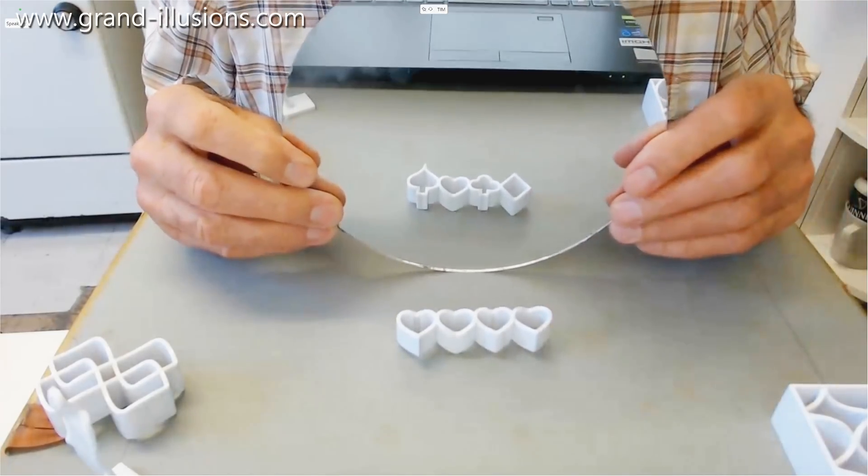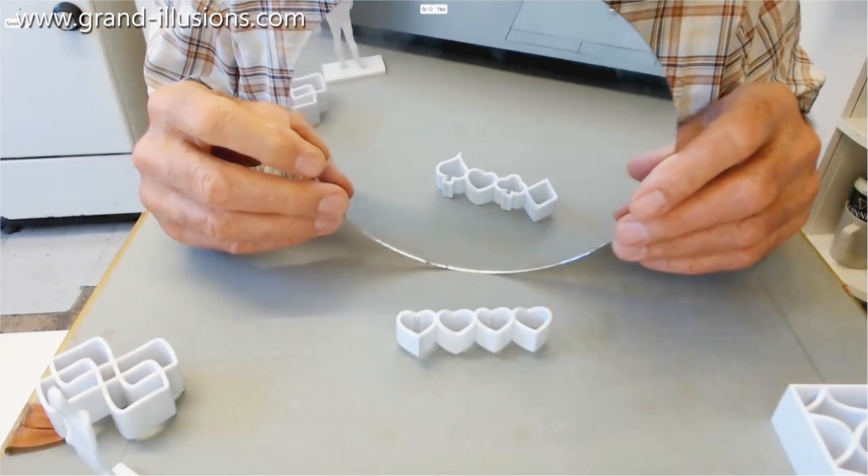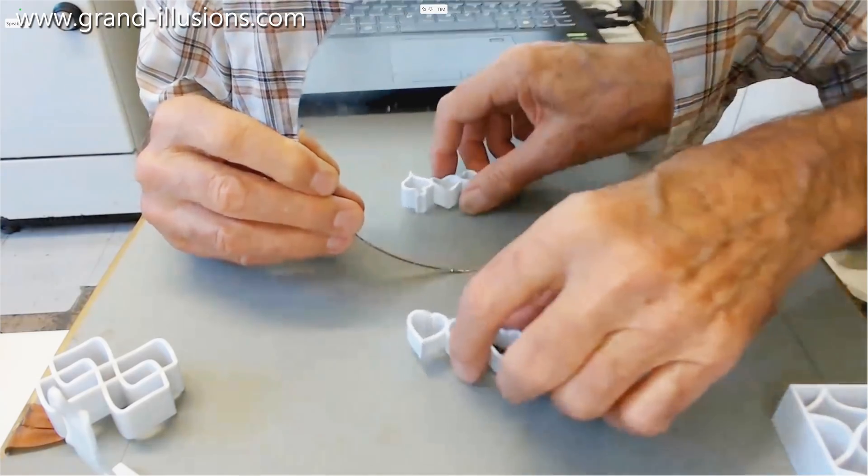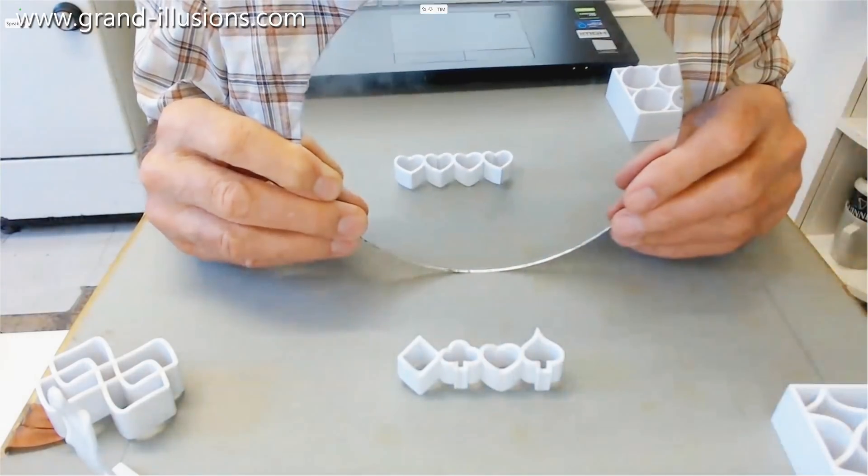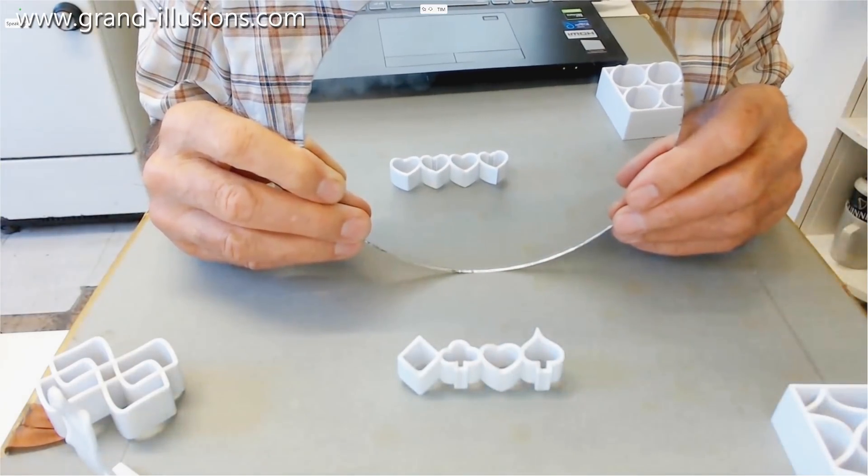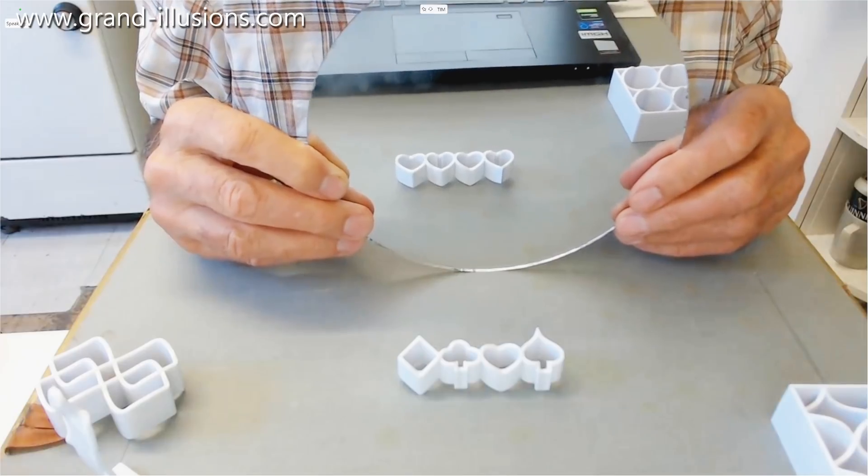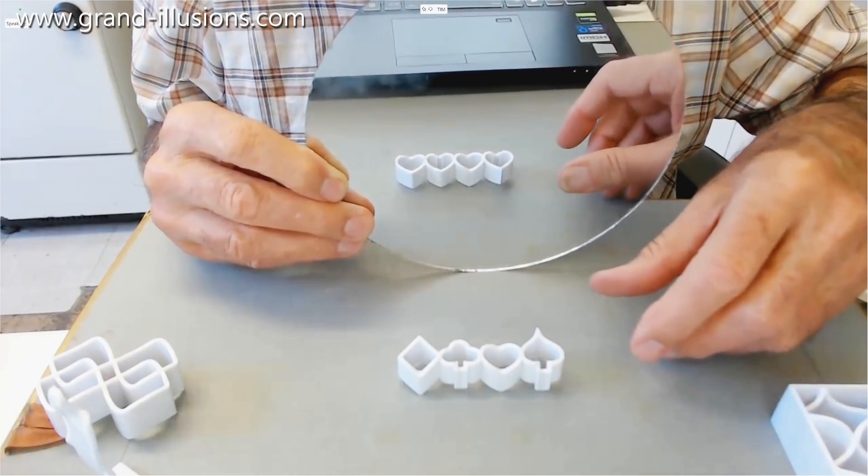Spades, hearts, diamonds, clubs, or whatever the order is. Extraordinary. And if I turn the piece round, you see it really does appear both ways at the same time. Extraordinary, isn't it? Just by the angle of observation, typically 45 degrees looking down, you get this amazing transformation.